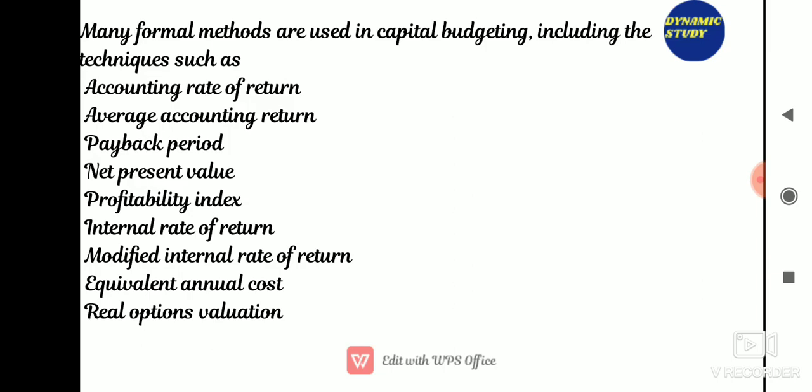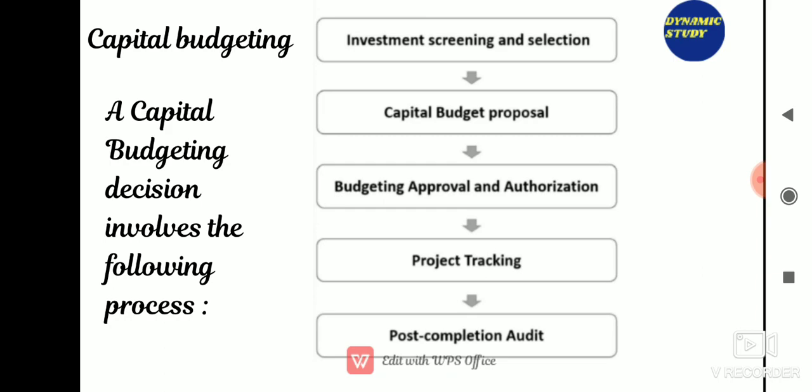Capital budgeting is an art of finding assets that are worth more than they cost, to achieve the predetermined goal of optimizing the wealth of the business enterprise. The organization's main objective is wealth maximization. The capital budgeting process involves: investment screening and selection, capital budget proposal, budgeting approval and authorization, project tracking, and post-completion audit.